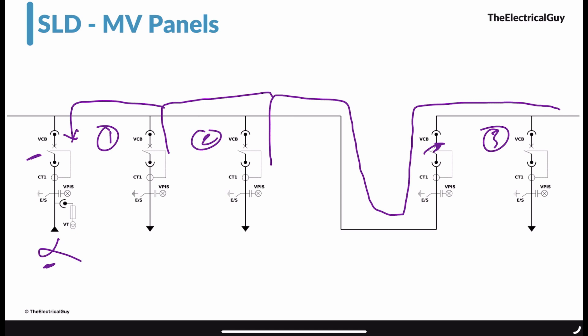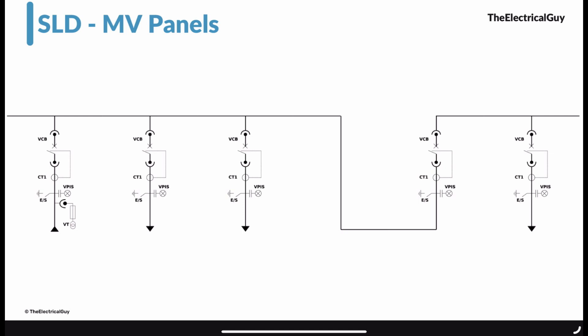That is the reason why we need bus coupler and bus riser panels. I hope you understood this single line diagram of the medium voltage switchgear panel. If you have any doubts, feel free to put them in the comment section. If you're interested in learning more about single line diagrams — including higher voltage substations like 145 kV or 245 kV — I have a dedicated playlist on single line diagrams linked in the description.